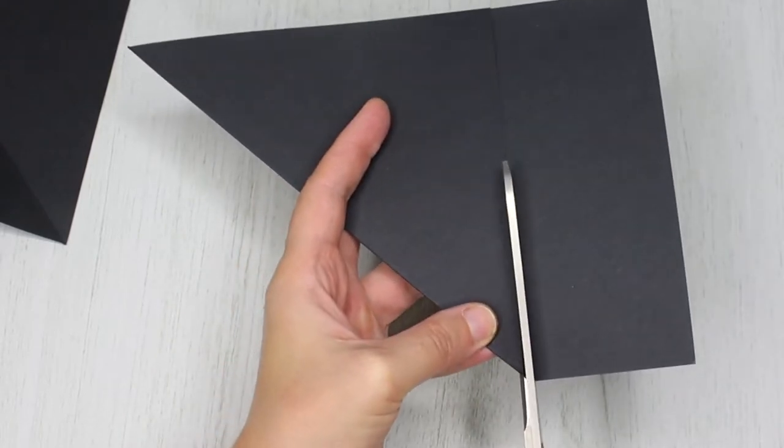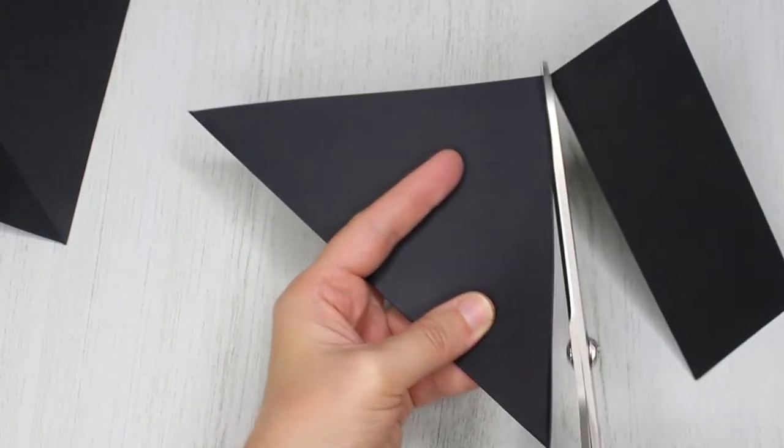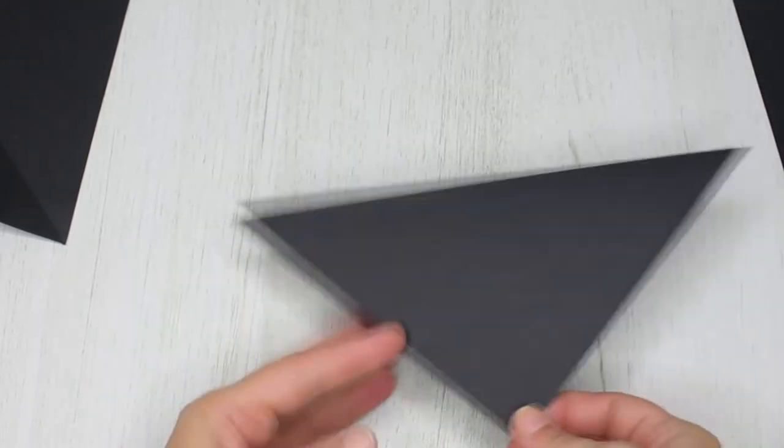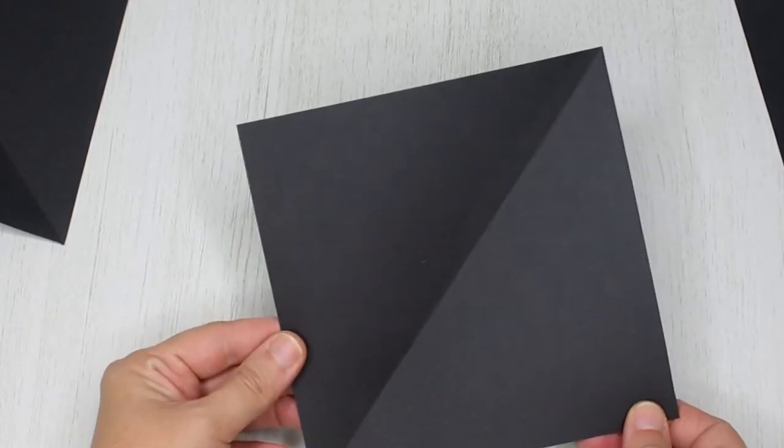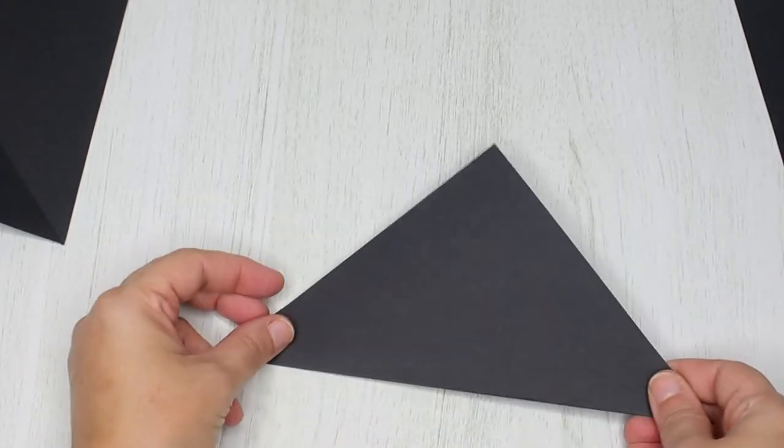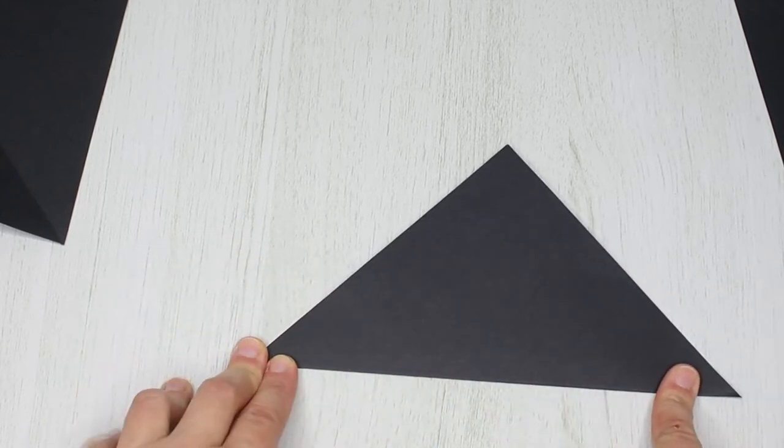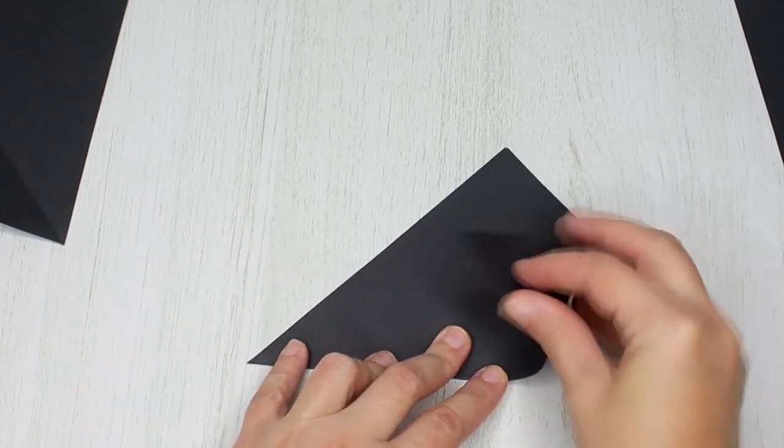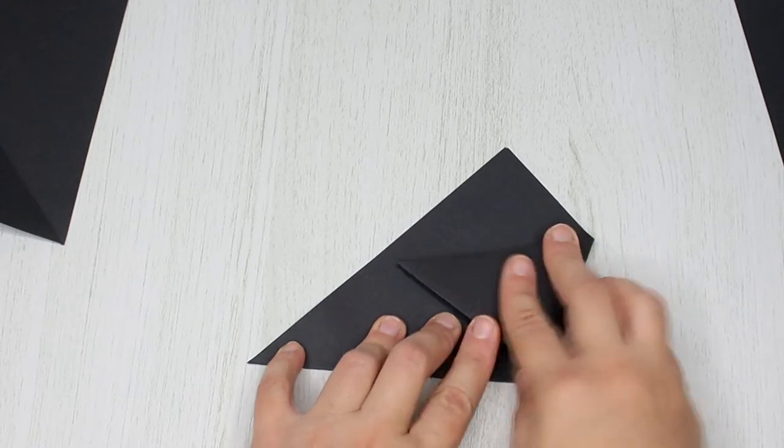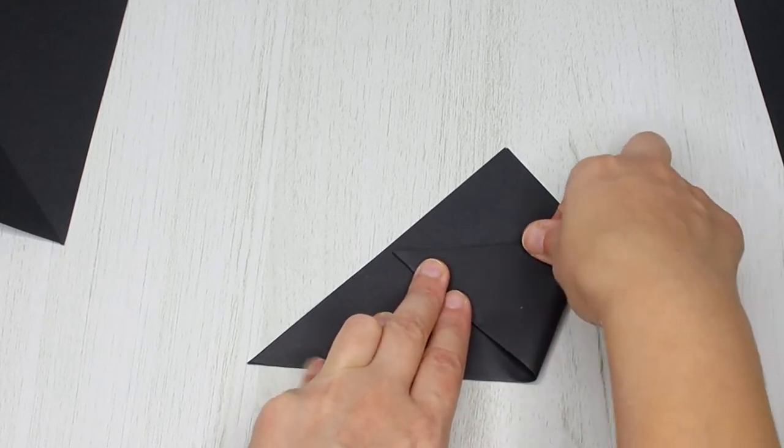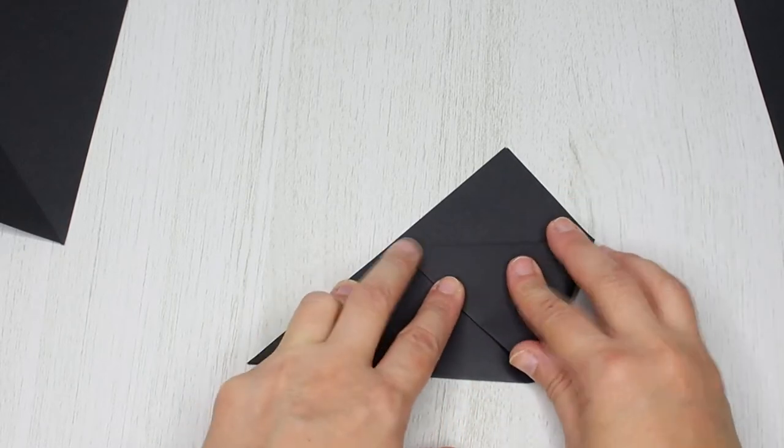Then you trim the extra paper. So you'll end up having a square piece of paper. Fold it in half diagonally. With the fold on the bottom side, fold the side flaps one on top of the other. Make sure they are parallel with the base.